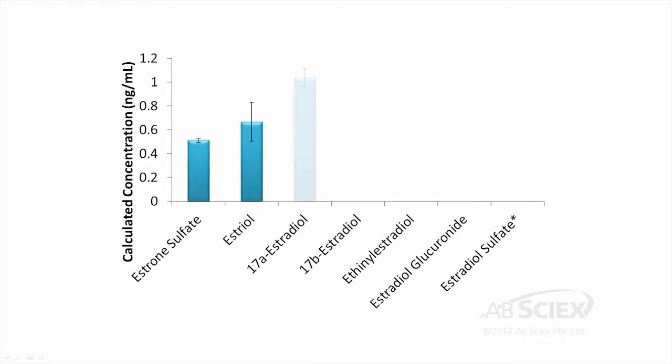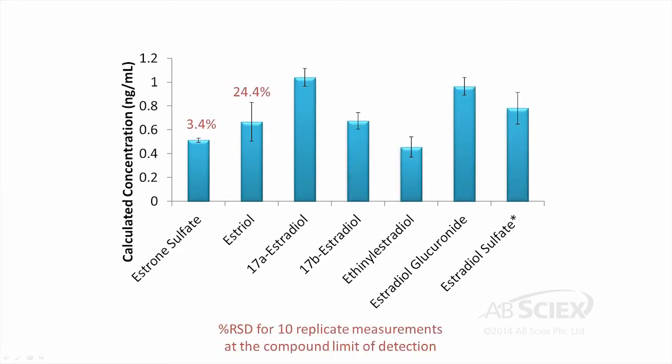Shown here, for example, after 10 repeated injections of our dirty swine lagoon extracts, we were able to acquire precise quantitative data at the compound limits of detection ranging from 0.5 to 1 nanogram per milliliter.